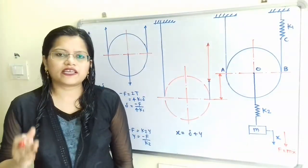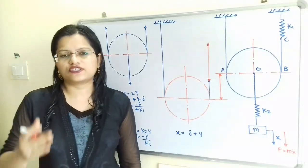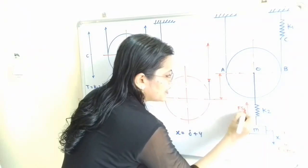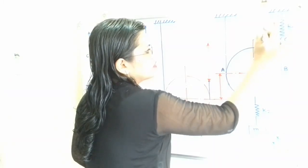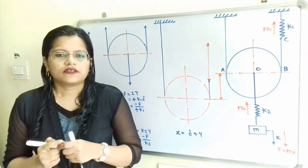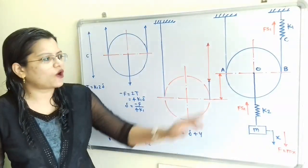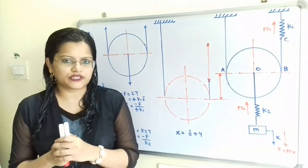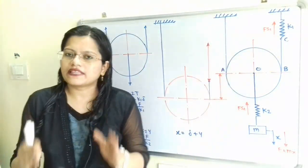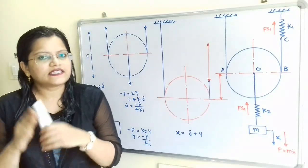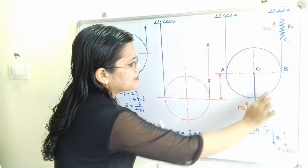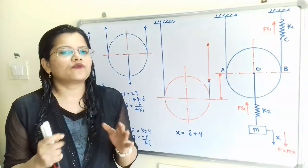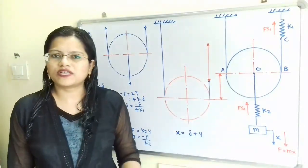Due to this displacement X in the downward direction, this spring force will act in the opposite direction of displacement, that is in the upward direction. Because this cord is inextensible — meaning this cord is not elastic — that is the reason why this pulley will rotate along this inextensible cord. There is rotational motion of this pulley, but the mass of the pulley is neglected. So we should not consider the mass moment of inertia for this pulley for the rotational motion.